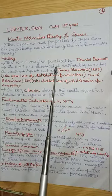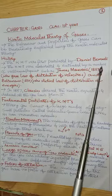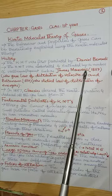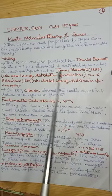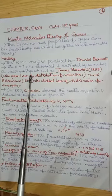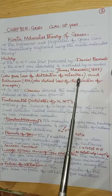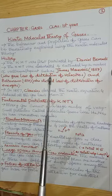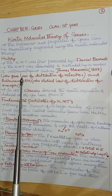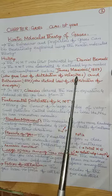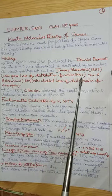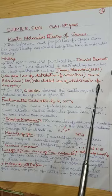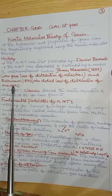KMT was elaborated and extended by a number of well-known physicists such as James Maxwell in 1859, who gave the law of distribution of velocities. And Boltzmann in 1870, who studied the law of distribution of energies.